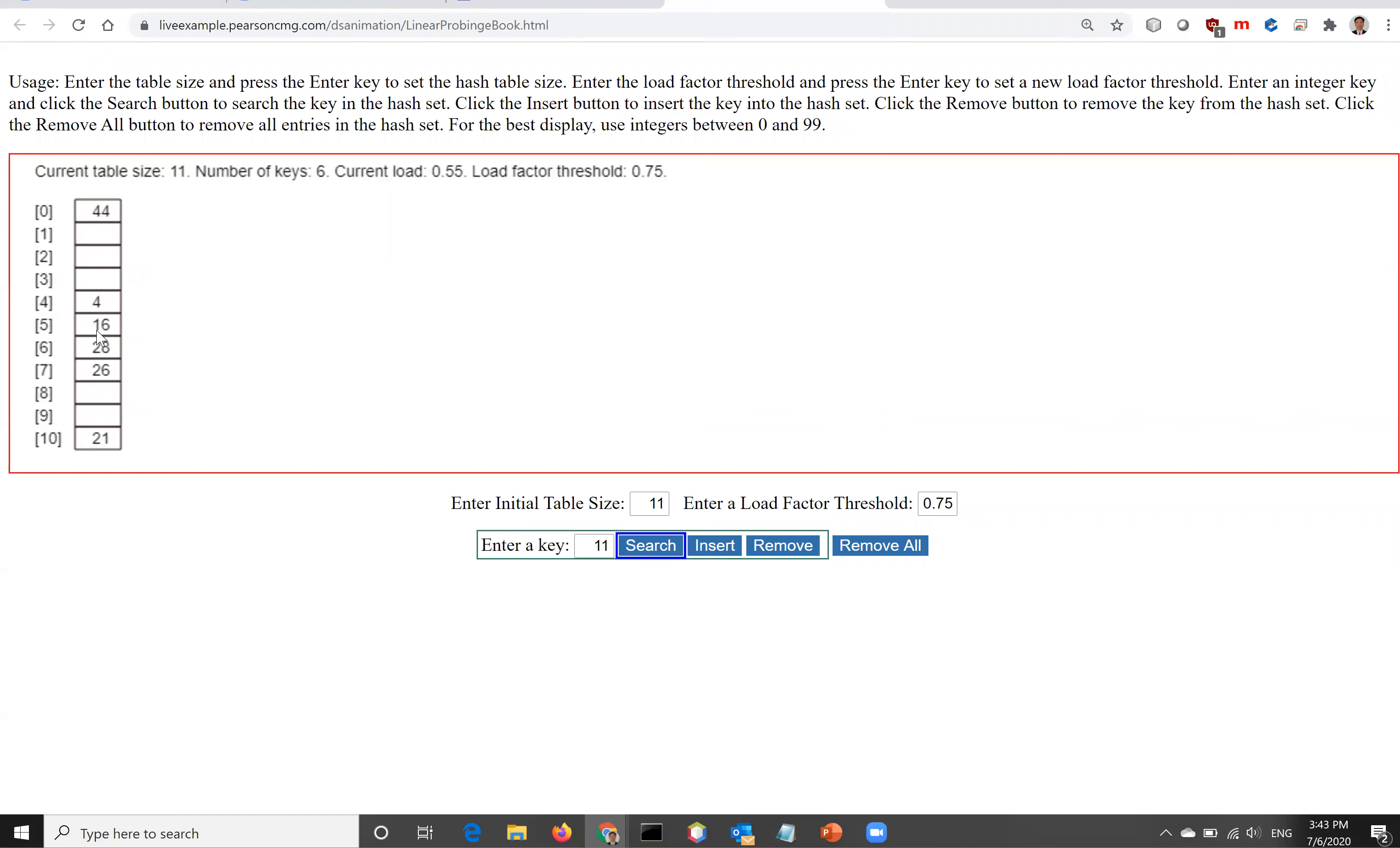All right. So now I'm going to delete 16. Remove 16. When you remove it, you're going to put a special marker. This special marker means this is available for insertion, but when you perform a search, you have to continue to search the next location after this marker.